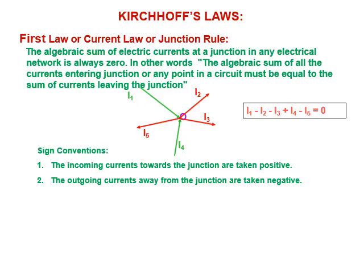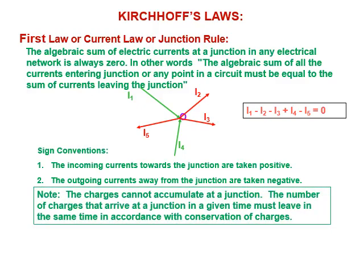Consider the diagram. At point O, there are five currents. Current i1 is incoming, so it is positive. Current i2 is outgoing, so negative. i3 is outgoing, so negative. i4 is incoming, so positive. And i5 is outgoing, therefore negative. Mathematically: i1 − i2 − i3 + i4 − i5 = 0. Charges cannot accumulate at the junction; the number of charges that arrive must leave in the same time, according to conservation of charges.